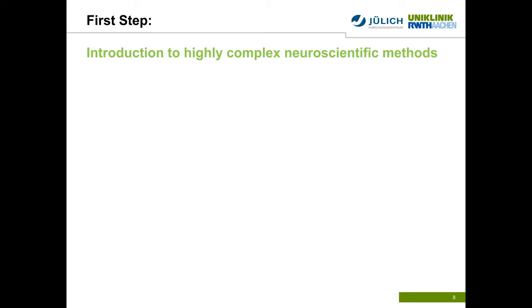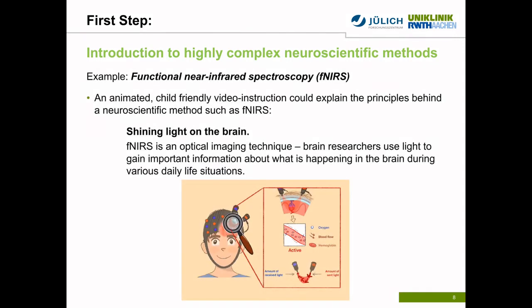We propose a way to teach children how a neuroscientific method works. As an example, we introduce functional near-infrared spectroscopy, in short, fNIRS. fNIRS is an optical imaging technique that we frequently use in our lab. We created an animated child-friendly video instruction that explains the principles of fNIRS and why we do fNIRS research. Such a video could be sent to families before participation. Below, you can see a short animation that explains the principles of light absorption and interference of brain activation through the difference in the amount of sent and received light by the fNIRS device.